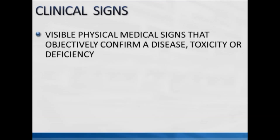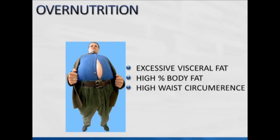In the process of assessing, we're interested in clinical signs — visible physical medical signs that objectively confirm a disease, a toxicity, or a specific kind of deficiency. In the case of over-nutrition, clinical signs are also visible through anthropometric measurements, and these measure excessive visceral fat, high percent of body fat overall, and of course a high waist circumference.